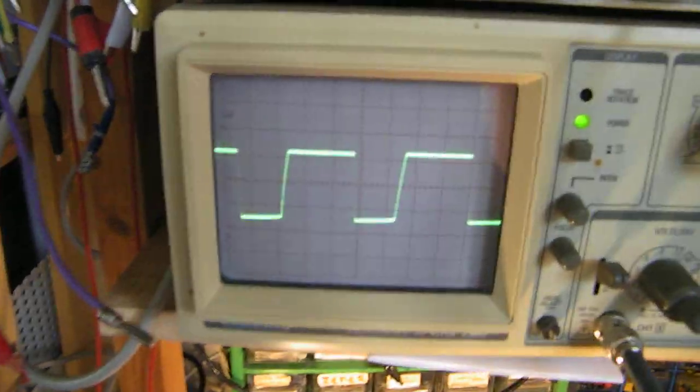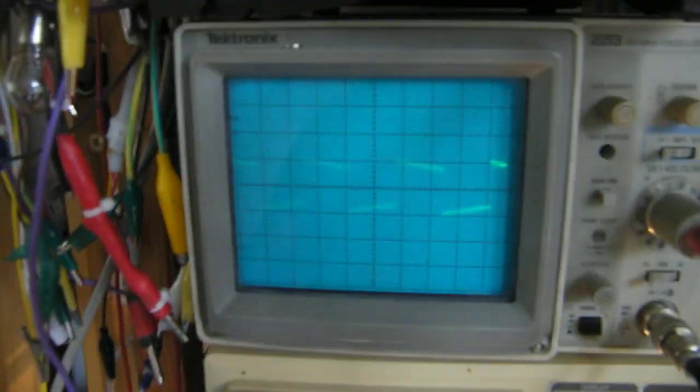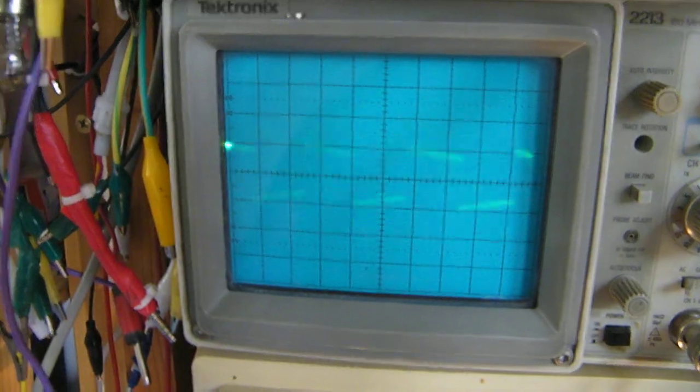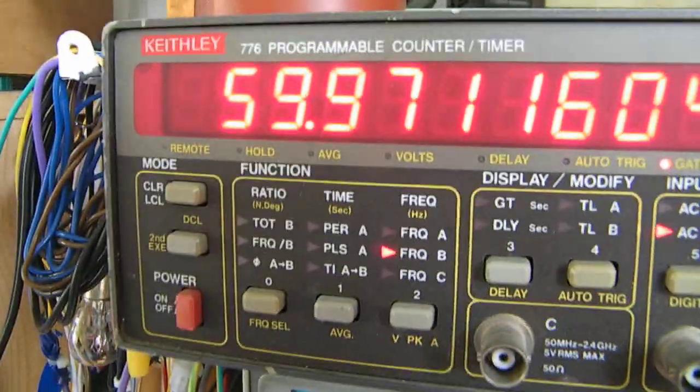Supplied by 10 volts. Also works on 12 volts. Here you can see what happens. This is the input to the frequency divider. This is the output, ten times lower. This is the actual frequency at the output.